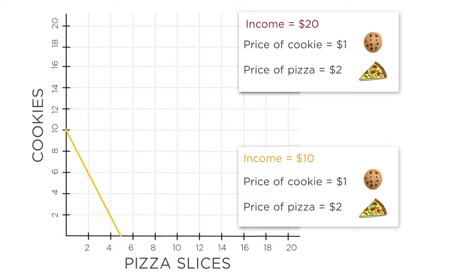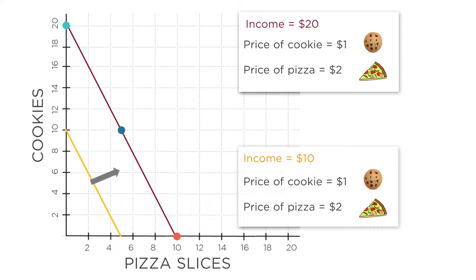If you spend all your money on pizza, you can buy 10 slices. If you spend all your money on cookies, you can get 20 cookies. Or you can spend half your income to get 10 cookies and the other half to get 5 slices of pizza. Connecting these points, you can see that a change in income is represented by a shift outward or inward of the budget constraint. The new constraint is parallel to the old one, but further out.